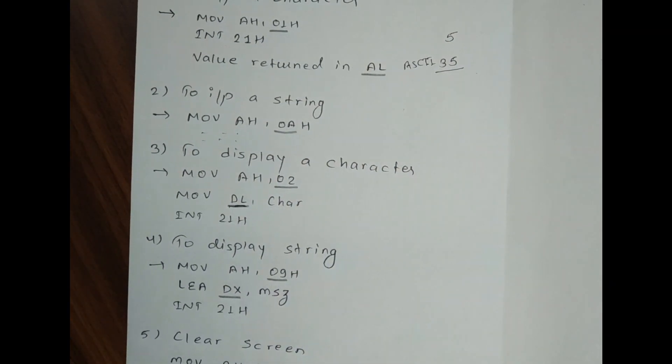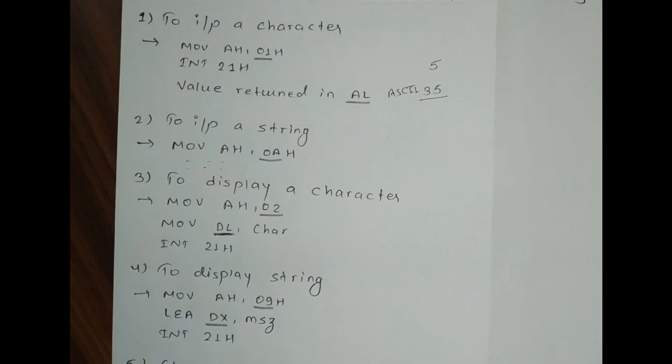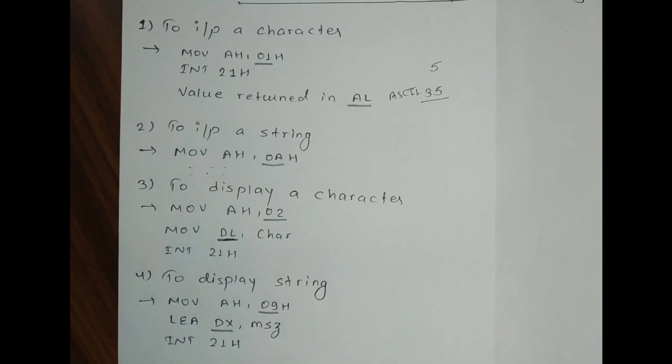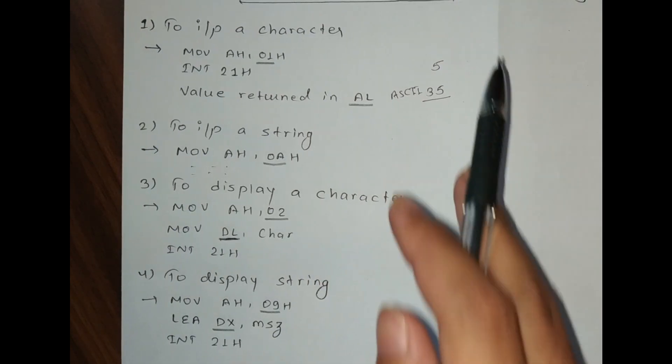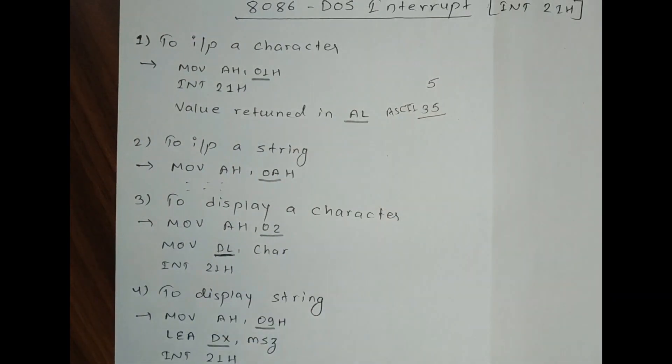By using 01H, 0AH, 02H, and 09H, you can perform character input, character display, string input, and string display. These are a few operations we can perform using INT 21H and AH. There are a lot of operations that we can perform by using this interrupt, but for now we'll learn about just these four instructions because we'll need them to write some programs.